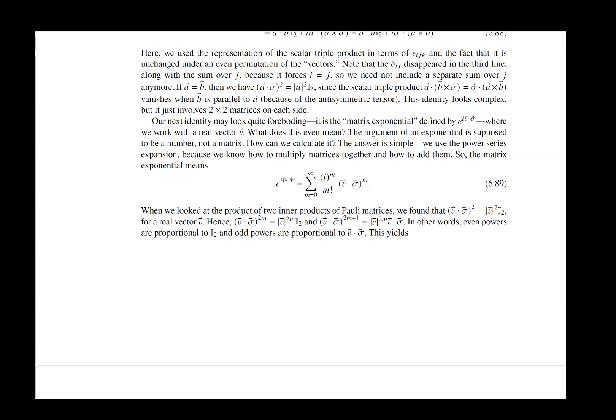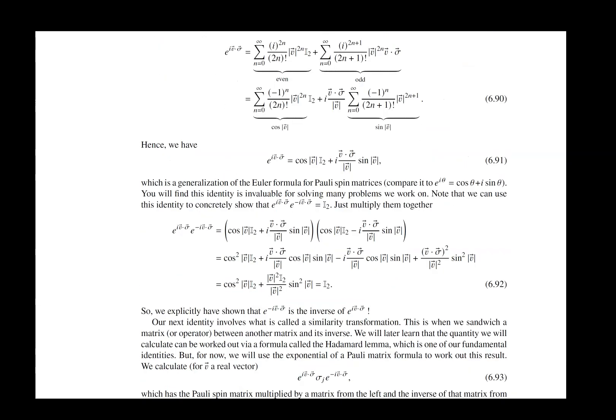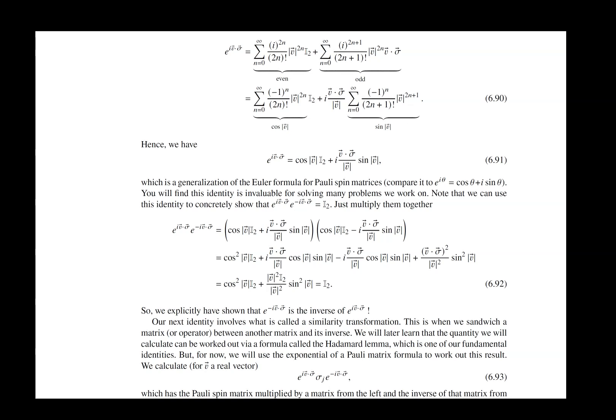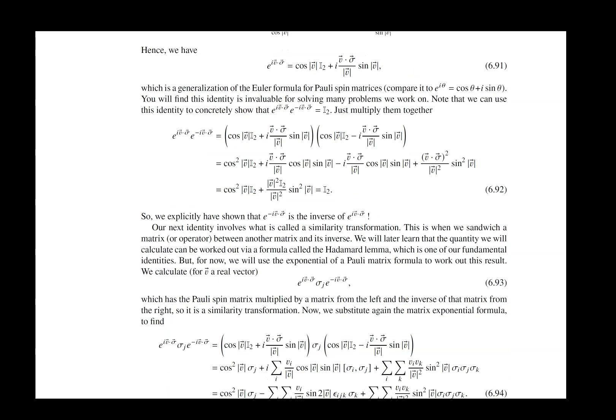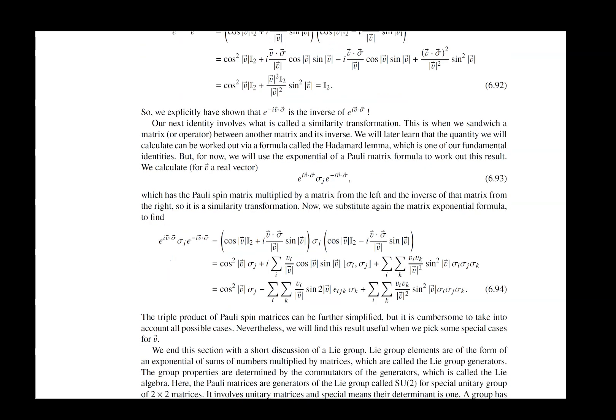And then we get the generalized Euler identity. And this is a really important one. We get it just by working with our exponential power series and recognizing what the series is for a cosine and for a sine. And then after that, we're looking at the product of an exponential and the negative of the exponential. Those should be the inverses of each other and give the unit matrix, which indeed is what they do.